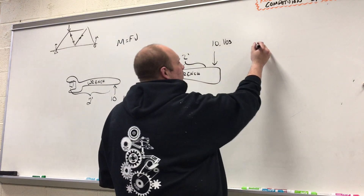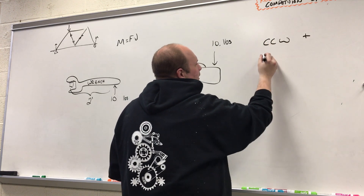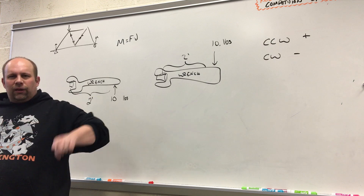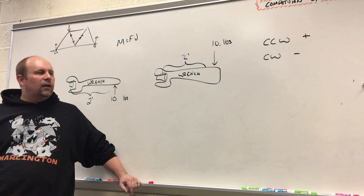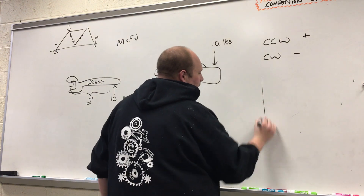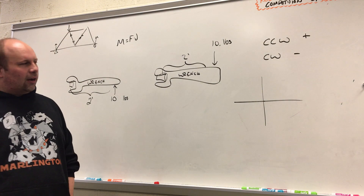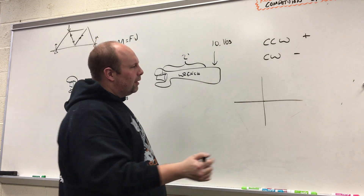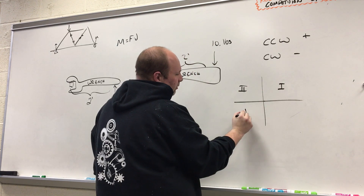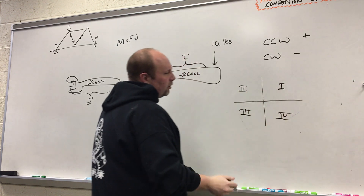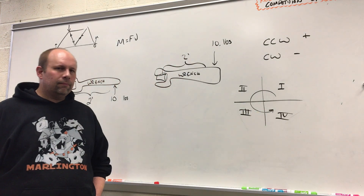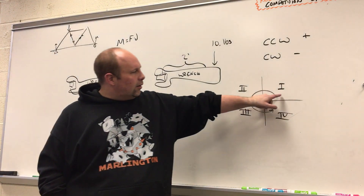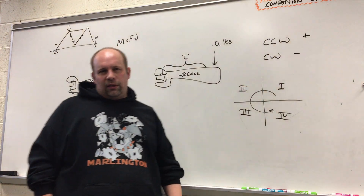The traditional convention — counterclockwise is positive, clockwise is negative. Students often think clockwise should be positive because clock numbers go up clockwise, but this actually ties back to mathematics. On a coordinate plane, quadrants are numbered counterclockwise: first, second, third, fourth. That's why counterclockwise is designated as the positive direction.